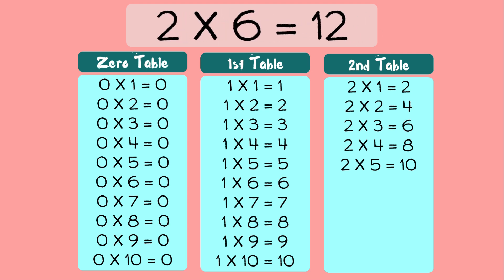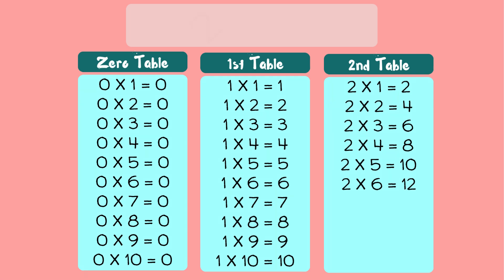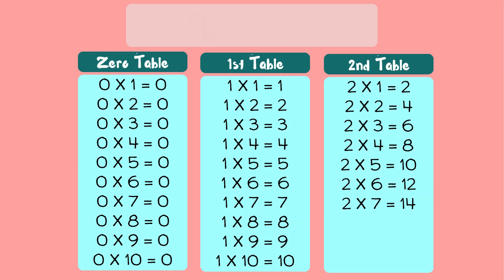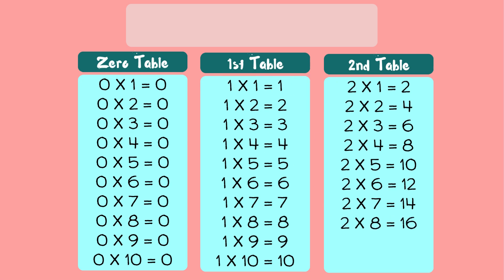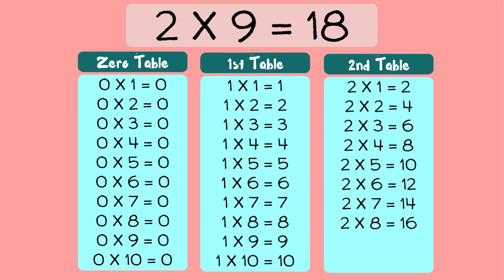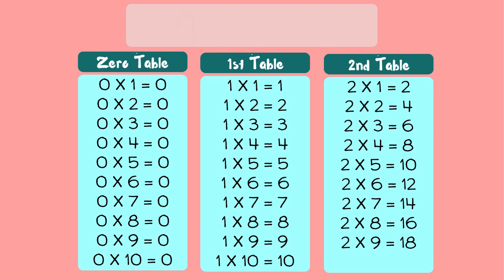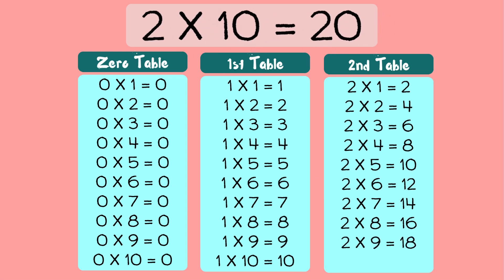Two six's a twelve. Two seven's a fourteen. Two eight's a sixteen. Two nine's a eighteen.